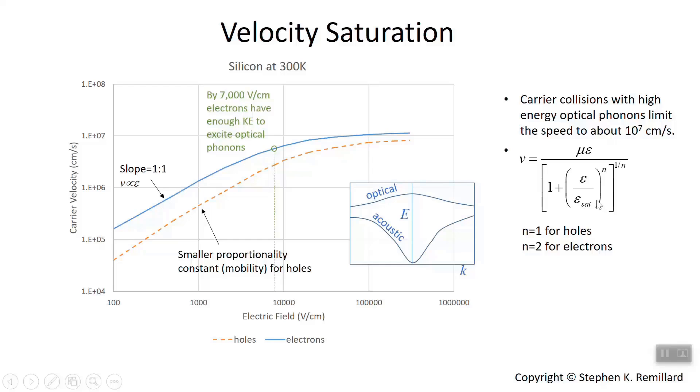Depending on whether it's an electron or a hole, 50% or 70% of the way to saturation. The only difference between electrons and holes, then, in this behavior is the value of N, one for holes, two for electrons.